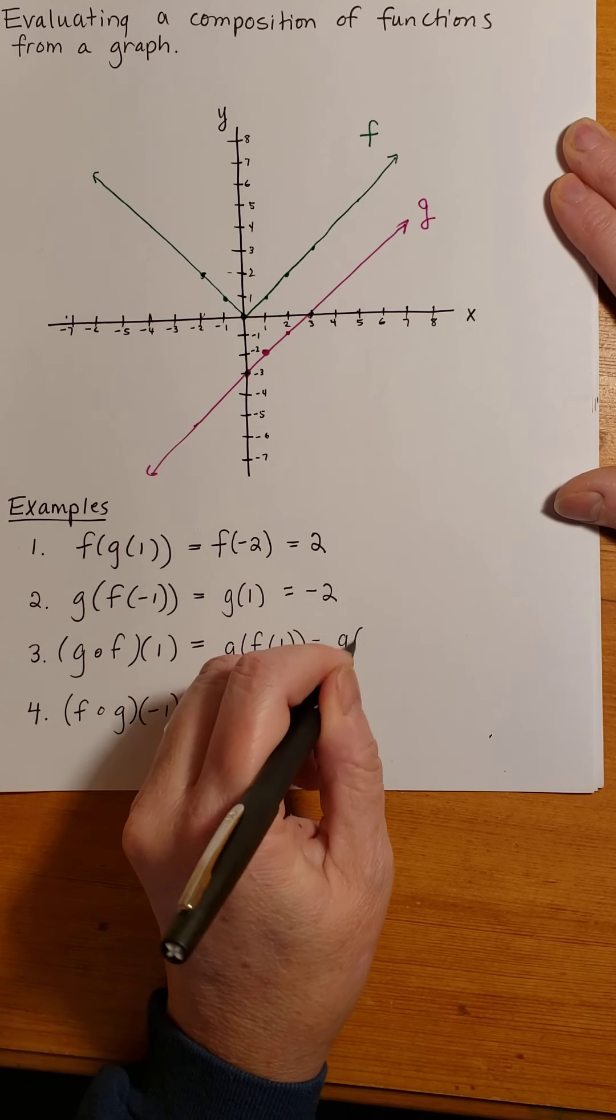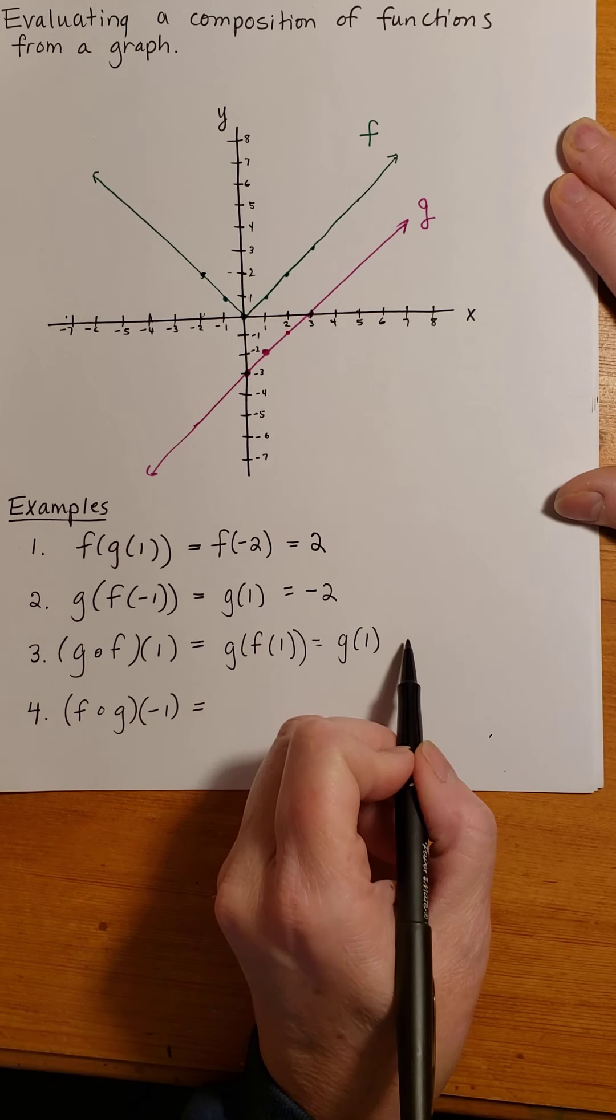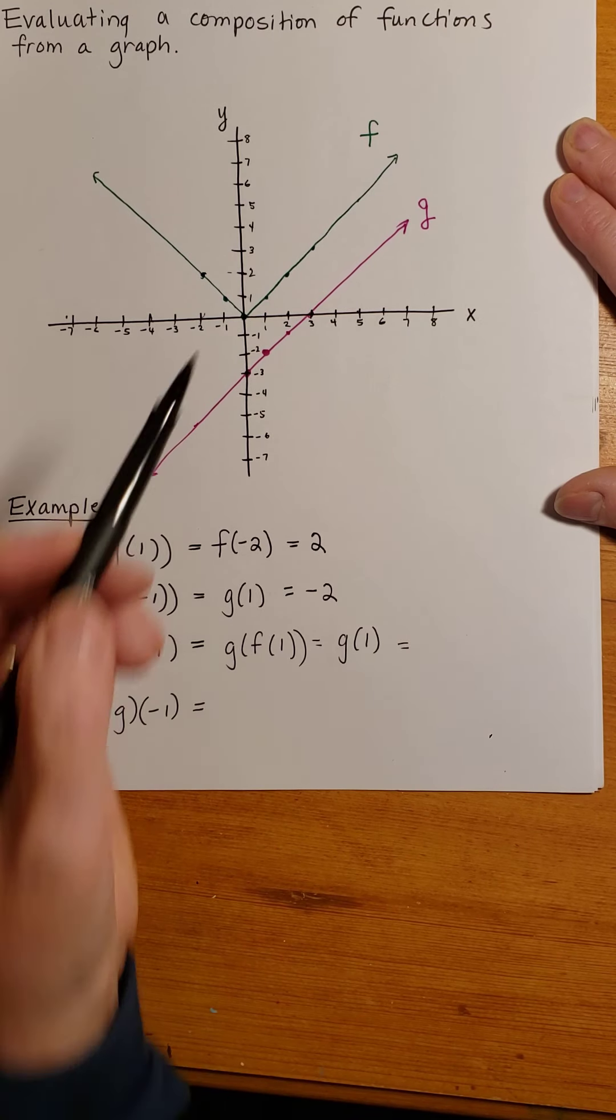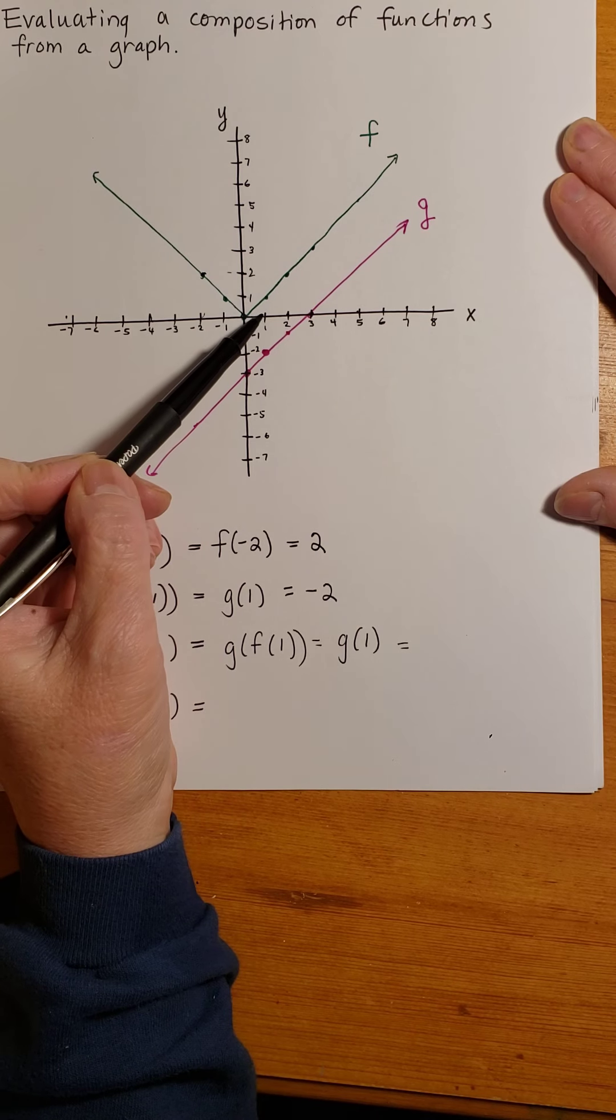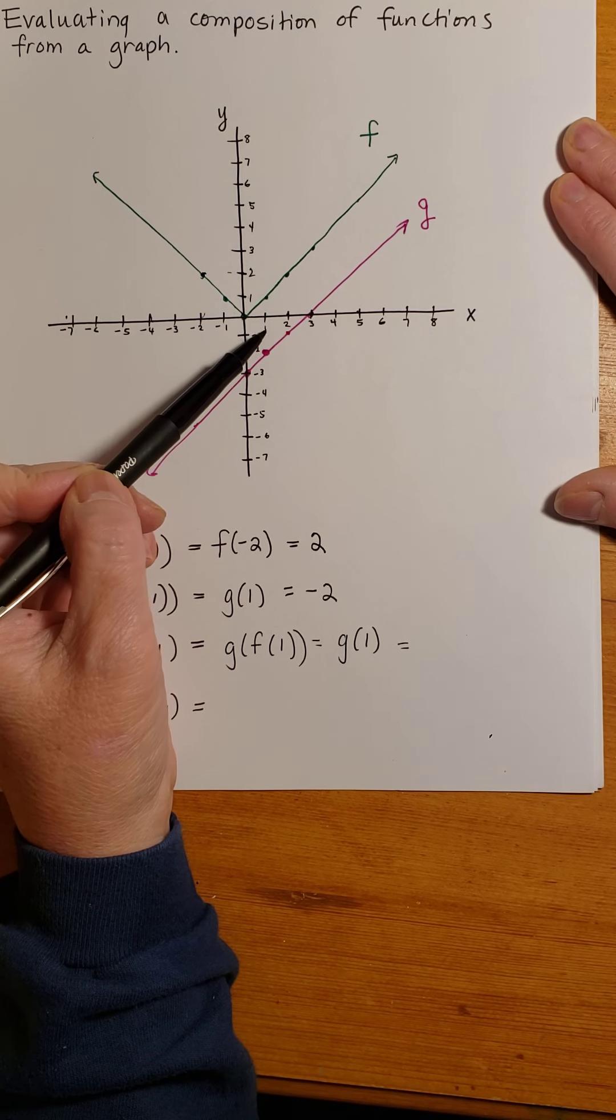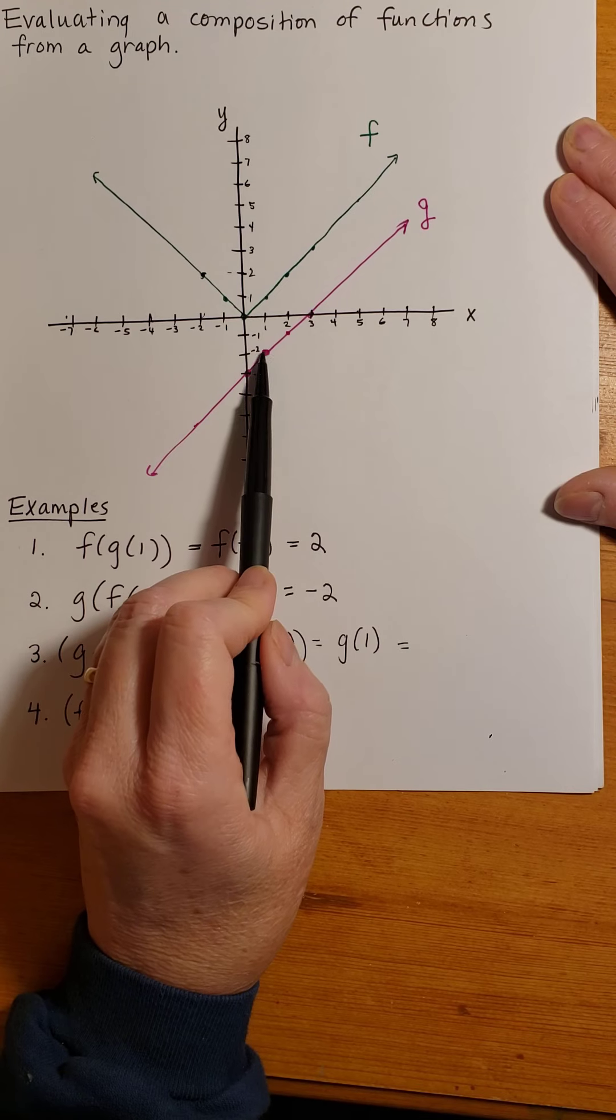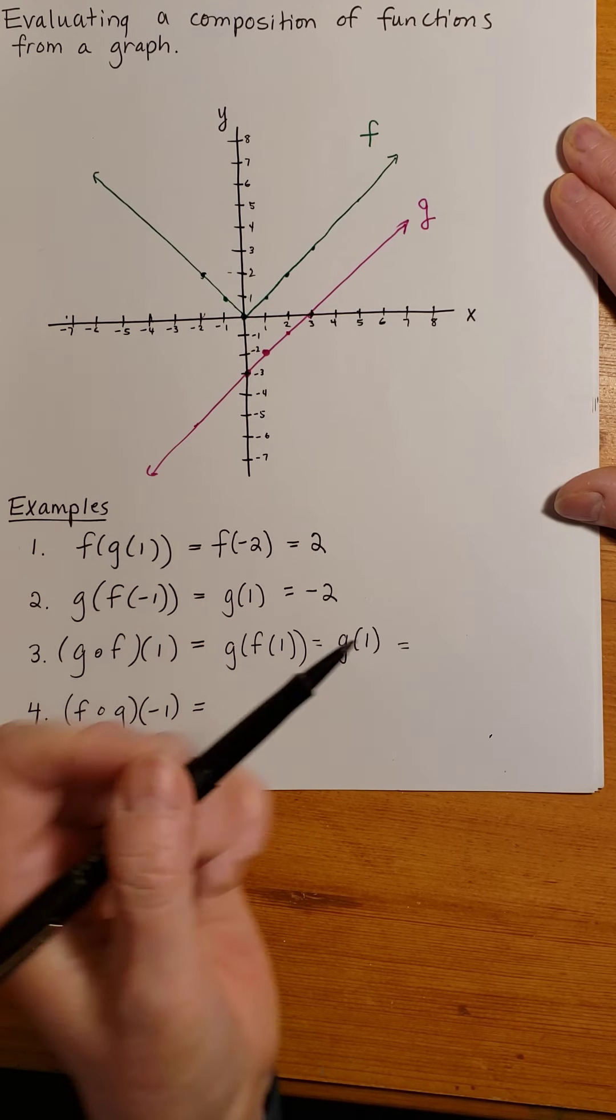So this becomes g of 1, and g of 1 is negative 2. Taking that vertical path to the function at 1, and then the horizontal path to the y-axis, I'm at negative 2.